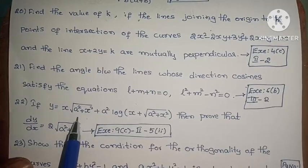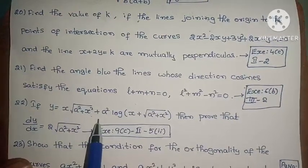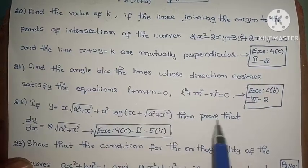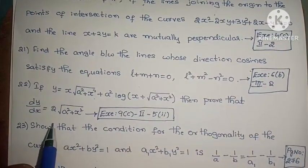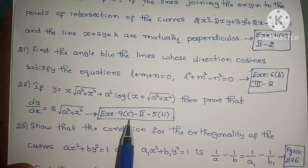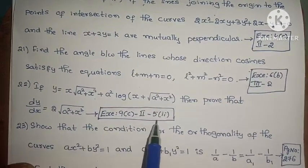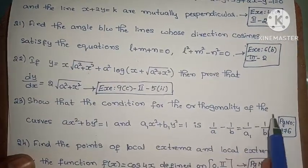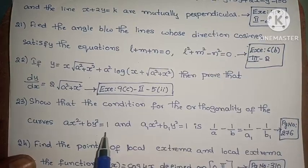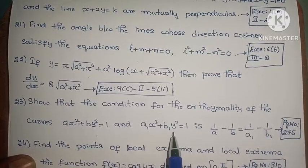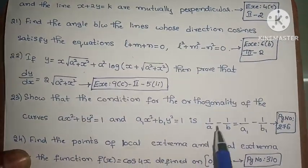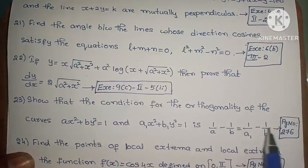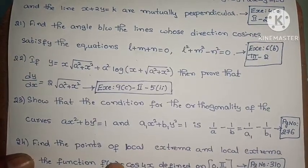Next, if y equals x times root of a squared plus x squared plus a squared times log of (x plus root of a squared plus x squared), then prove that dy/dx equals 2 root of a squared plus x squared. Exercise 9c, second roman law, fifth one. Next, show that the condition for orthogonality of the curves ax squared plus by squared equals 1 and a1x squared plus b1y squared equals 1 is 1 over a minus 1 over b equals 1 over a1 minus 1 over b1. Example problem on page number 276.